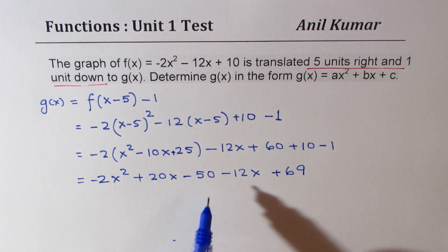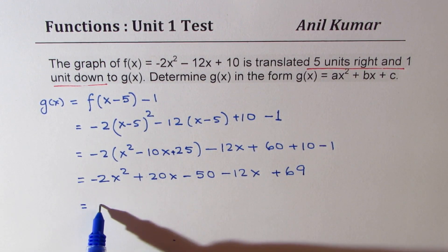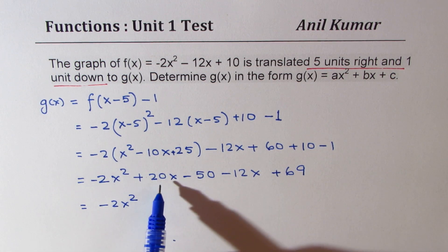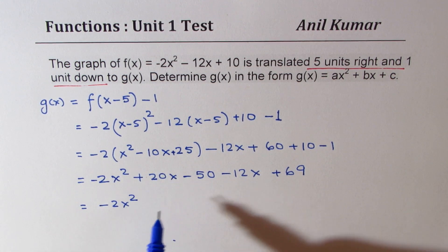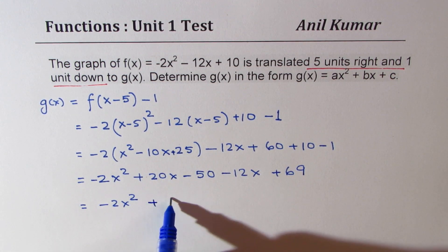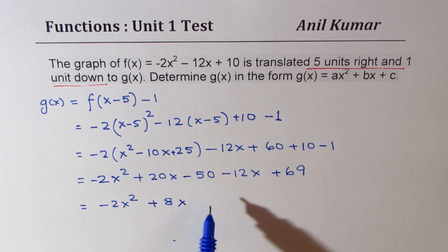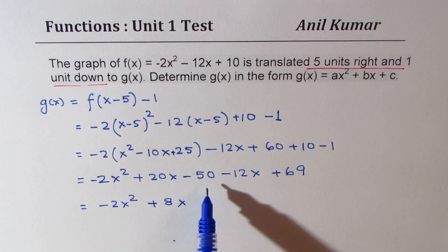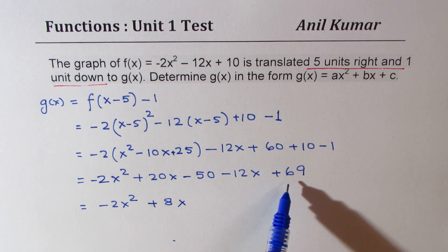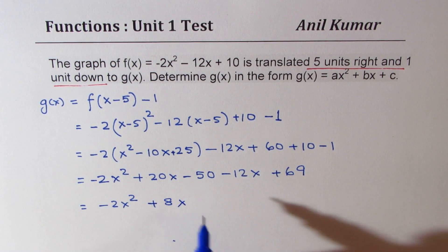Now combining all terms: for x² we have -2x². For the x terms, 20x - 12x = 8x. For the constants, -50 + 69 = +19. So g(x) = -2x² + 8x + 19. That is the transformed function in standard form — that is the answer.